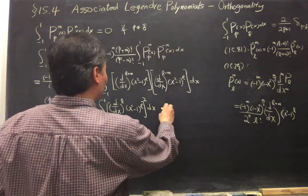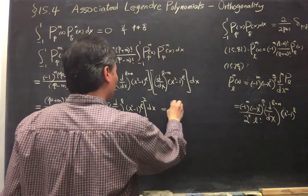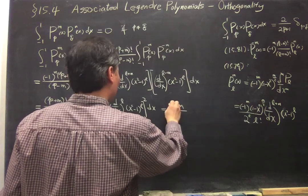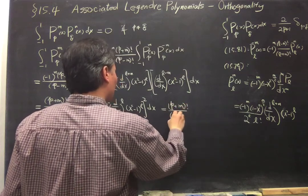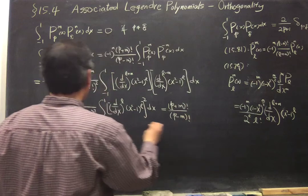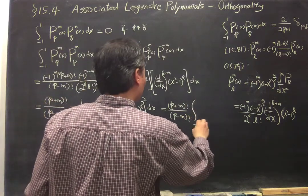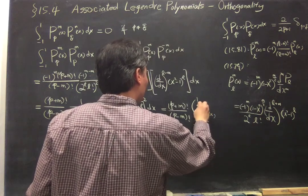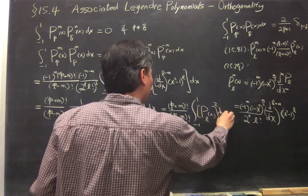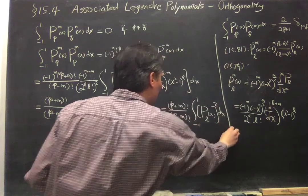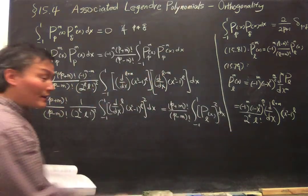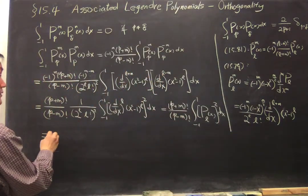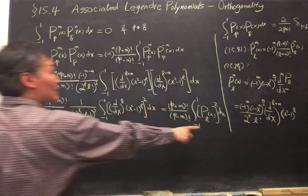This is simply minus one to one PL. That one is quite straightforward because you already know.